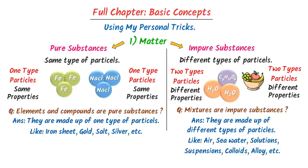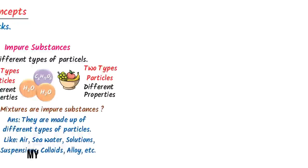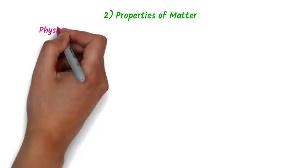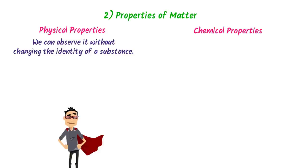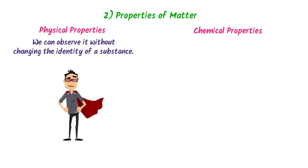So remember about pure substances and impure substances. The second topic is properties of matter — physical properties and chemical properties. We can easily observe physical properties without changing the identity of a substance. To remember the physical properties of matter, I always use my personal trick.